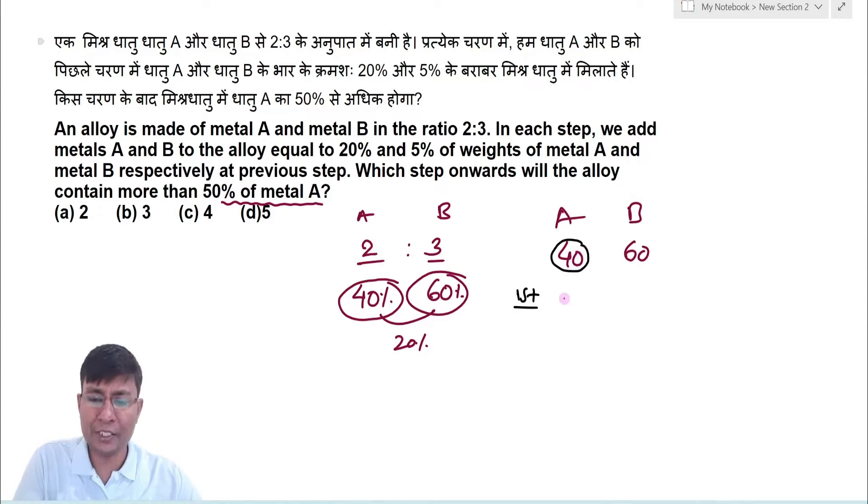So if you add A 20%, then 40% about 20% simply 8, so how much you will get: 48. And 60%, 5%, 5% is 1 upon 20, 60% 1 upon 20 is 3, so this quantity is 63. So first stage after this total quantity, 40%, 20%, 20% this time taking simply 20%, 1 upon 5 is 8, add to second case.